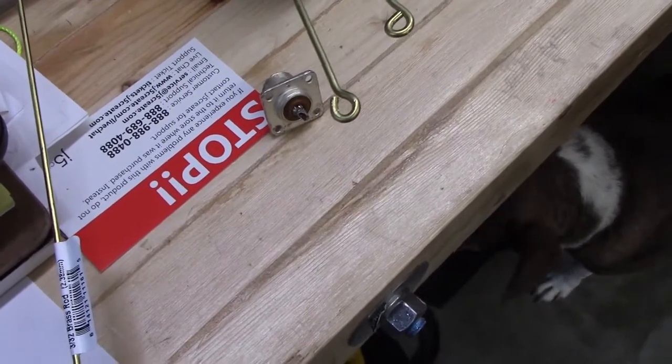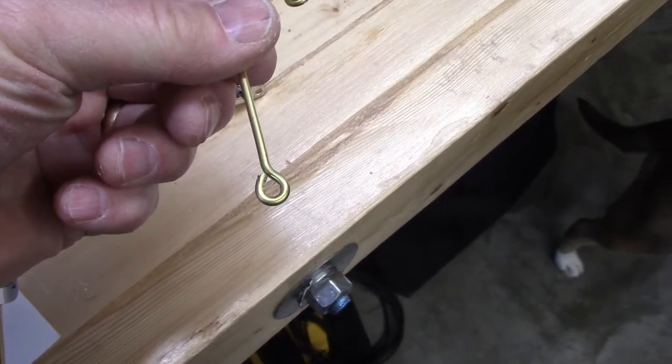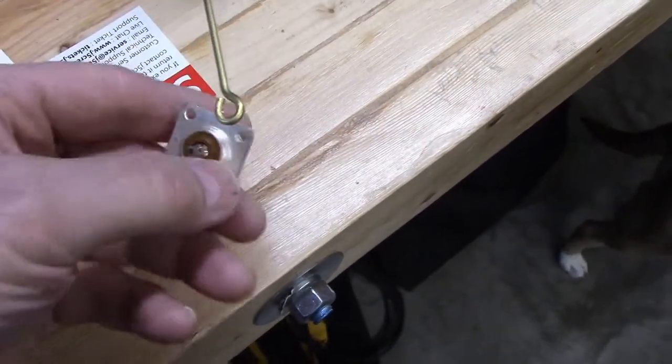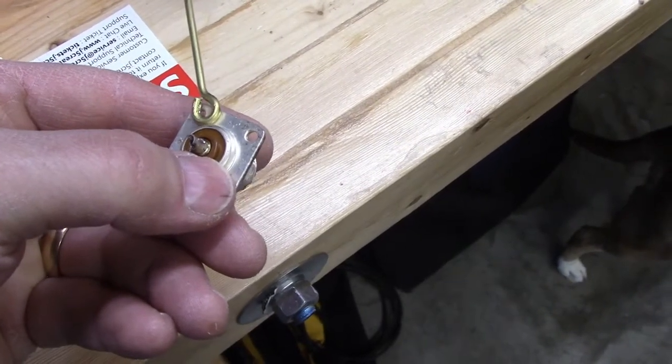First thing that we're doing is we're taking our brass rods and we are putting little eyelets on the end so that we can connect them to our connector here using some 440 hardware.